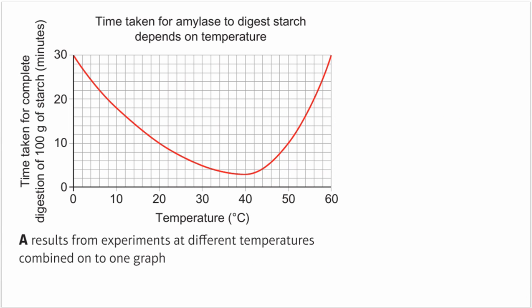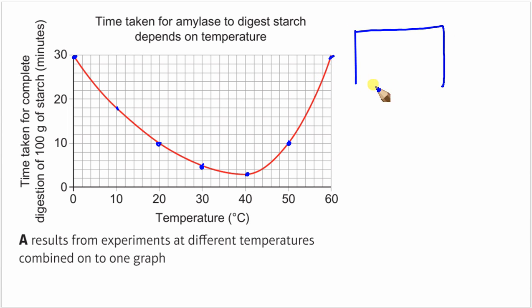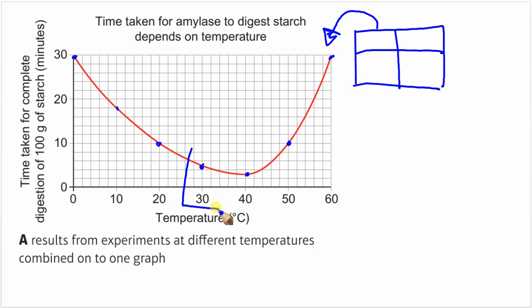Let's look at another example using student data. They carried out this experiment at 0, 10, 20, 30, 40, 50, and 60 degrees Celsius, giving seven data points. This graph was created by carrying out seven experiments. The student would have originally had a results table, and that table produced this particular curve. The challenge: calculate the rate of reaction at 30 degrees Celsius based on the information in that table.